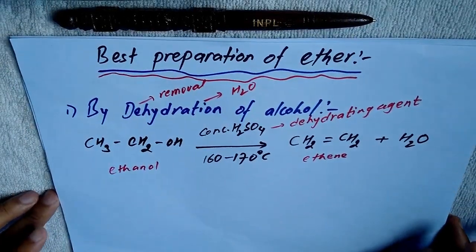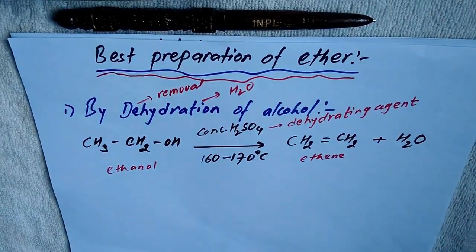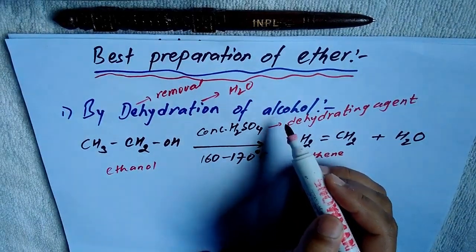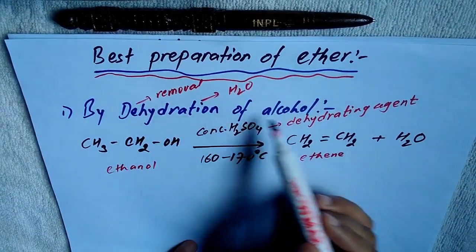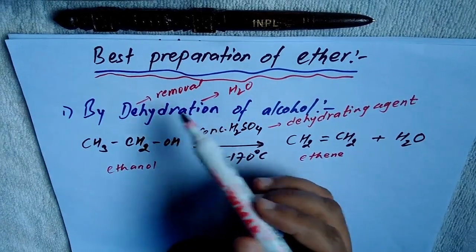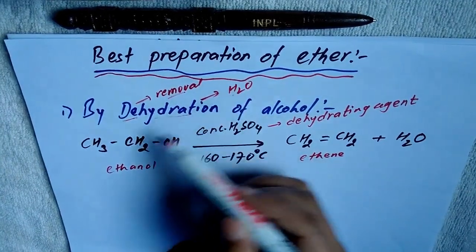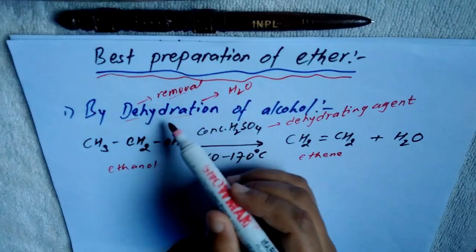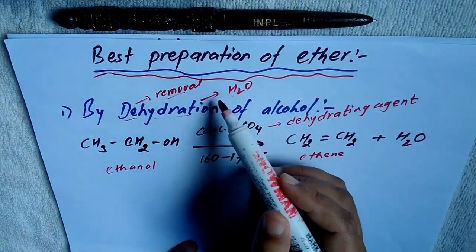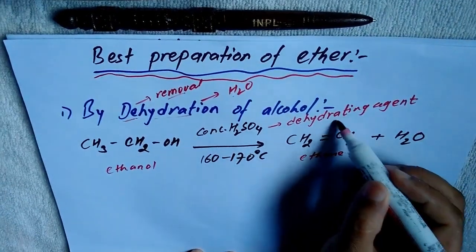Hello students, today we are going to study the preparation of ether. We can prepare ether from alcohol by dehydration of alcohol. Dehydration means removal of water — 'D' means removal and 'hydration' means water — so removal of water from alcohol is called dehydration. For dehydration, we use a dehydrating agent.